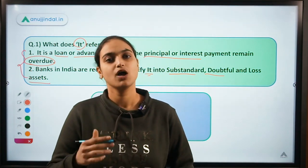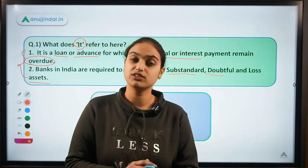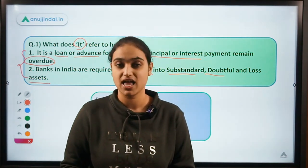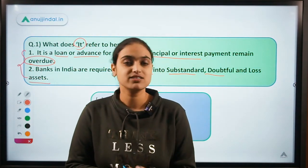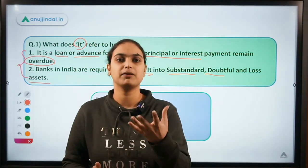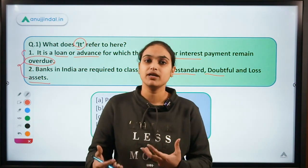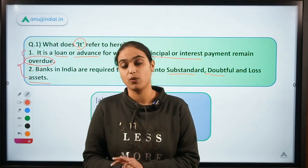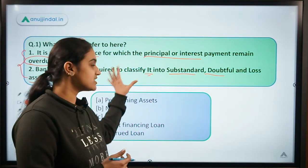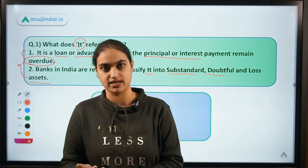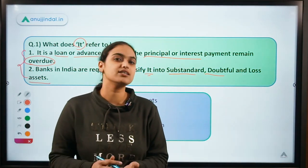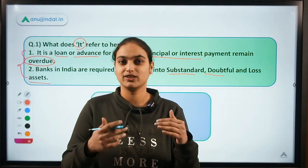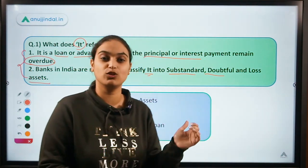They are talking about a loan or advance on which the payment is overdue. Banks and financial institutions are in the business of lending — they lend so that later they can recover the principal along with interest, which helps the bank make profit. But there are situations when banks are not able to recover these loans; the amount becomes overdue. Such loans or advances are known as NPAs — Non-Performing Assets. Why non-performing? Because they are not reaping the benefit the banks expected from lending. So we name them non-performing assets.